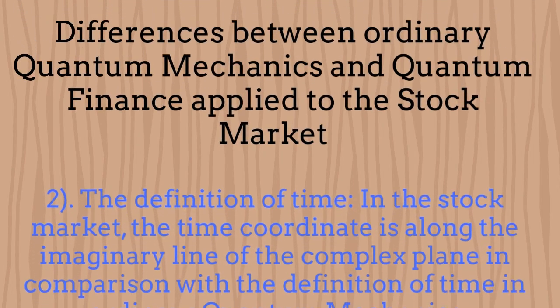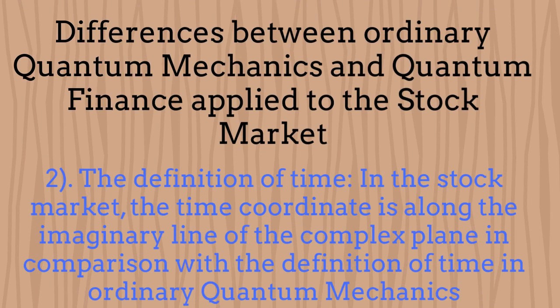The second difference between quantum mechanics and quantum finance applied to the stock market is in the definition of the time coordinate. If we want to compare ordinary quantum mechanics with the stock market behavior, we have to map the ordinary time coordinate to the imaginary line in the complex plane. This is due to the way time in the stock market is defined, and it is very important when analyzing the flow of information inside the market.